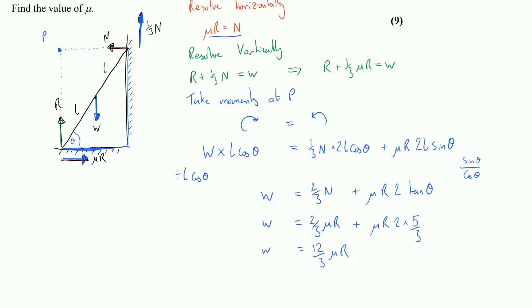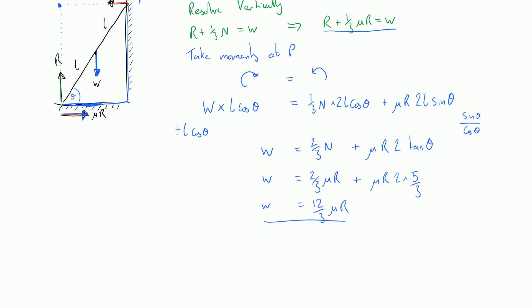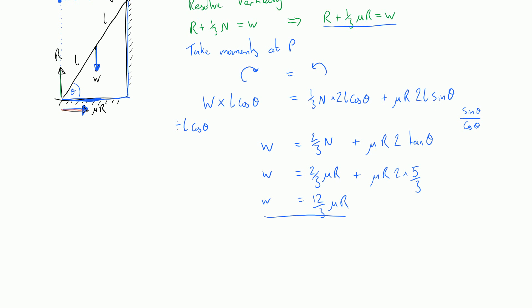Now I've got two equations — one from resolving vertically and one from taking moments — both in terms of R and W. Because W is the subject of both I can equate them: R plus one third μR equals twelve thirds μR. Dividing everything through by R and rearranging, I get eleven thirds μ equals one, and dividing by eleven thirds I find that μ is equal to three elevenths.